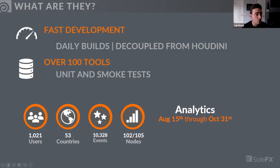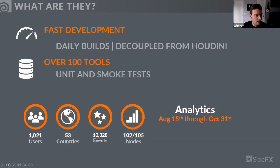With over a hundred tools now, we started doing a lot more testing — smoke tests and unit tests. We used this heavily when we switched to Houdini 17 to make sure all tools were in a decent state. We added analytics, and we now have over a thousand users across close to 53 countries. Surprisingly, about 99% of the tools are being actively used.